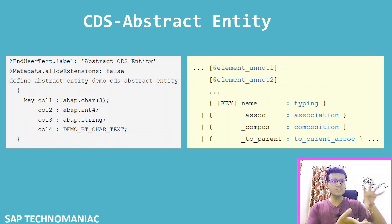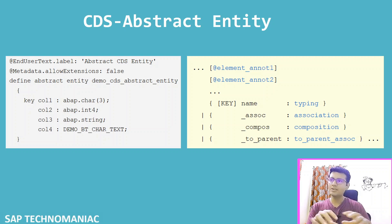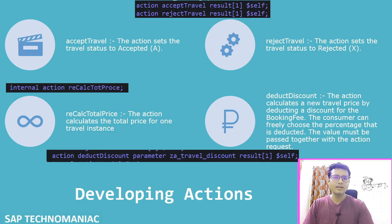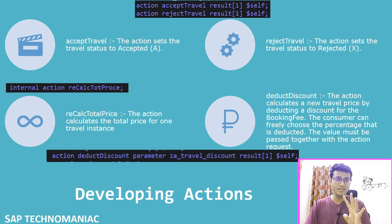You can't execute these abstract entity views to see data, but you can use this skeleton or structure to define the interface of your actions, functions, and business events. So this is all about the CDS abstract entity. In this particular draft application, we will create four actions.